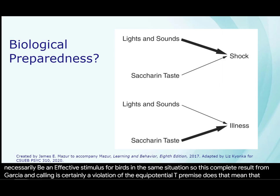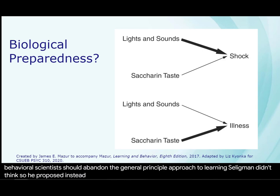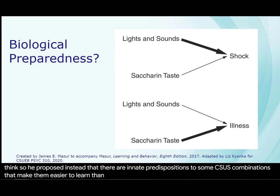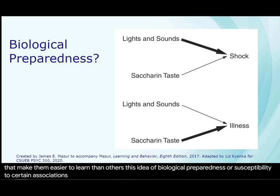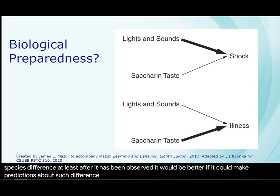Does that mean that behavioral scientists should abandon the general principle approach to learning? Seligman didn't think so. He proposed instead that there are innate predispositions to some CS-US combinations that make them easier to learn than others. This idea of biological preparedness or susceptibility to certain associations is appealing because it can explain just about any combinatorial or species difference, at least after it has been observed. But it would be better if it could make predictions about such differences beforehand.